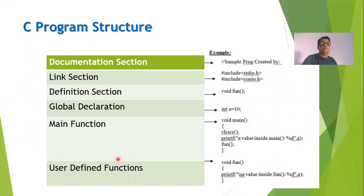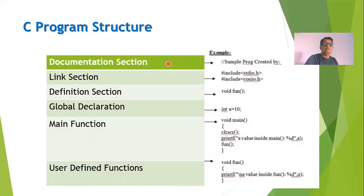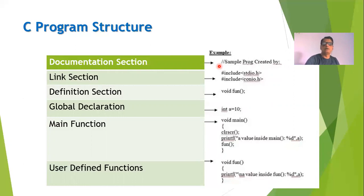Now let us understand what is the structure of a C program. Whenever you want to write a program in C language, you need to obey a certain structure. There are six sections in the C program structure. The first section is called the documentation section. In this section, normally we write some comments — for example, who is the author of the program or what is the purpose of the program.